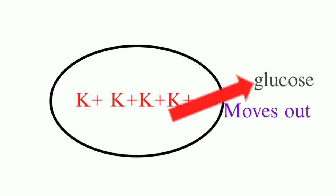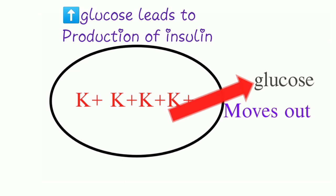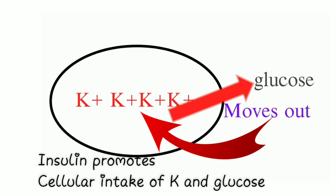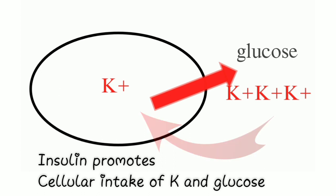In response to the high blood glucose levels, the beta cells in the islets of Langerhans secrete insulin, which promotes cellular intake of glucose as well as potassium ions.